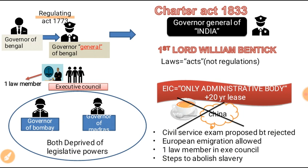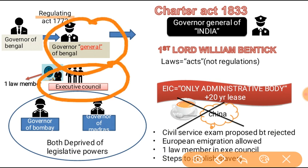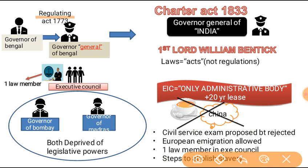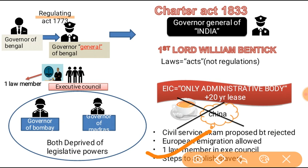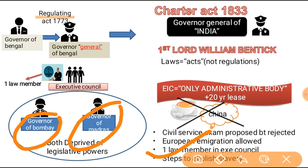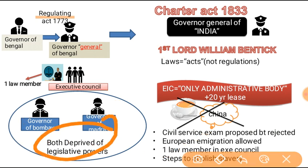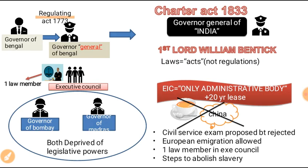One law member was included in the executive council. The executive council under the Governor General had three members — now one law member was added as the fourth. Steps to abolish slavery were directed: the administration was told to take steps to abolish slavery, and slavery was finally abolished after some years. The Governors of Bombay and Madras had their legislative powers removed — they could now only advise the Governor General.